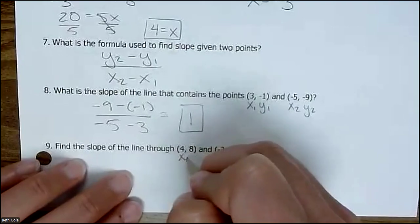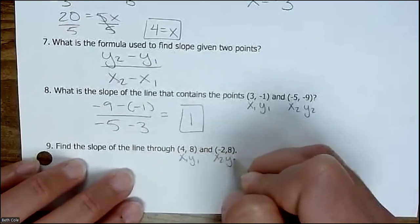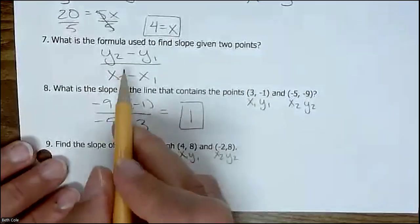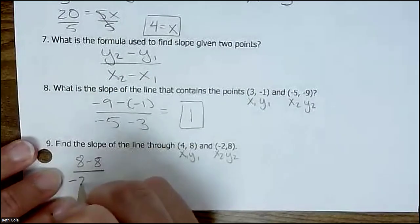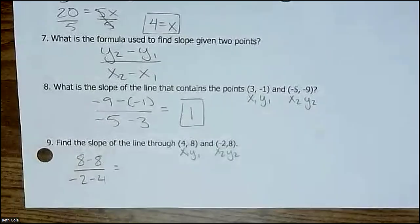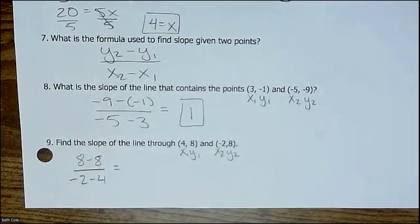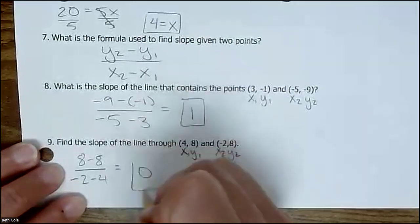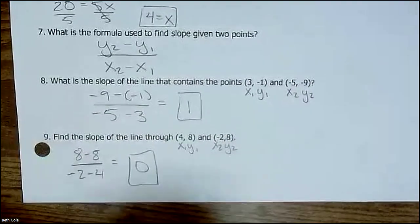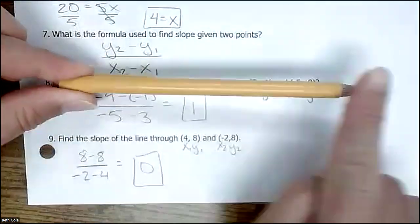Same thing with this one. If you want to label, if that helps you, then you can do that. First point, second point, and we're going to plug in y2 minus y1. So 8 minus 8 over negative 2 minus 4. I'm going to type that in the calculator exactly like it looks, and it tells me 0. What that means, since it's a 0 slope, is if you did a graph, it would be horizontal. It would be going this way.